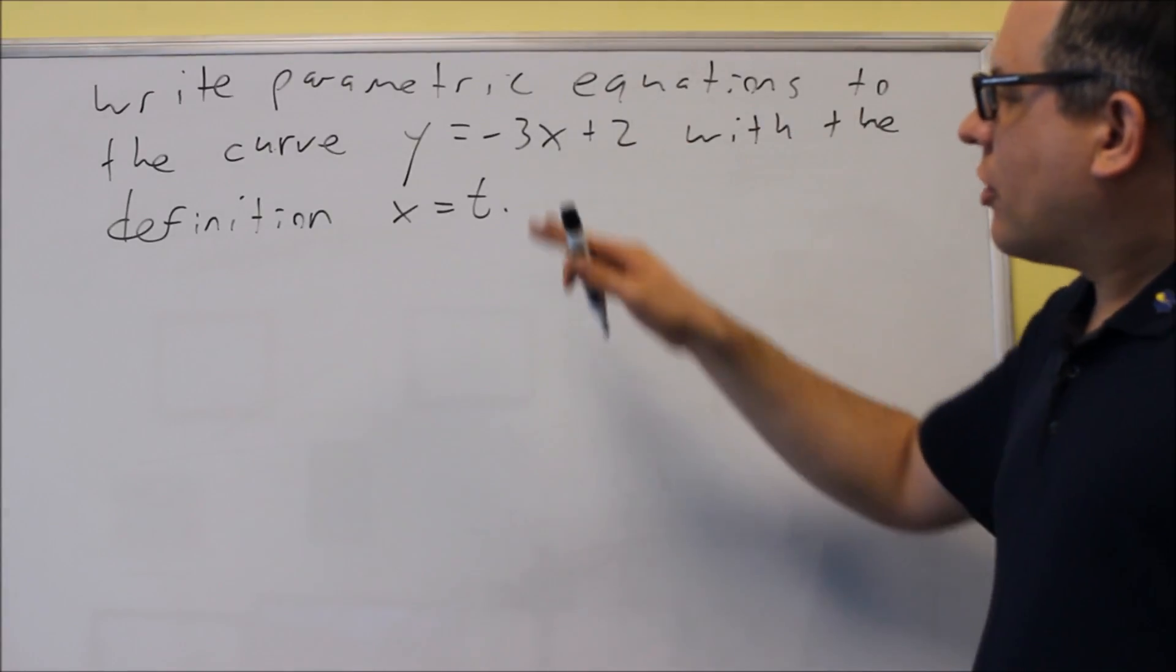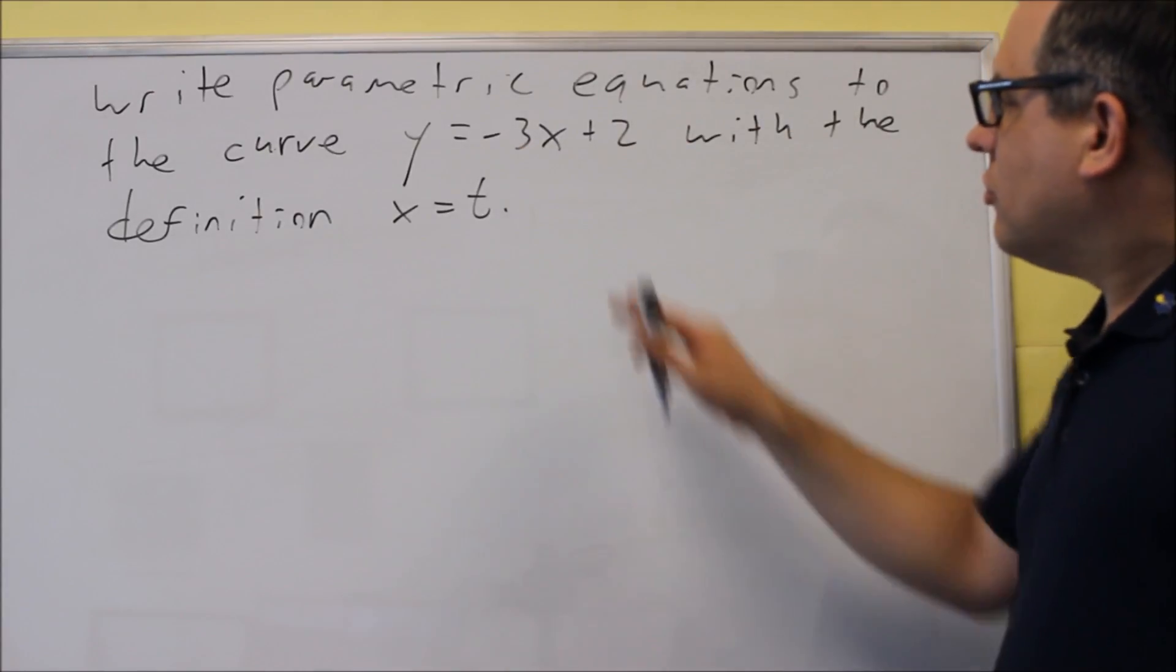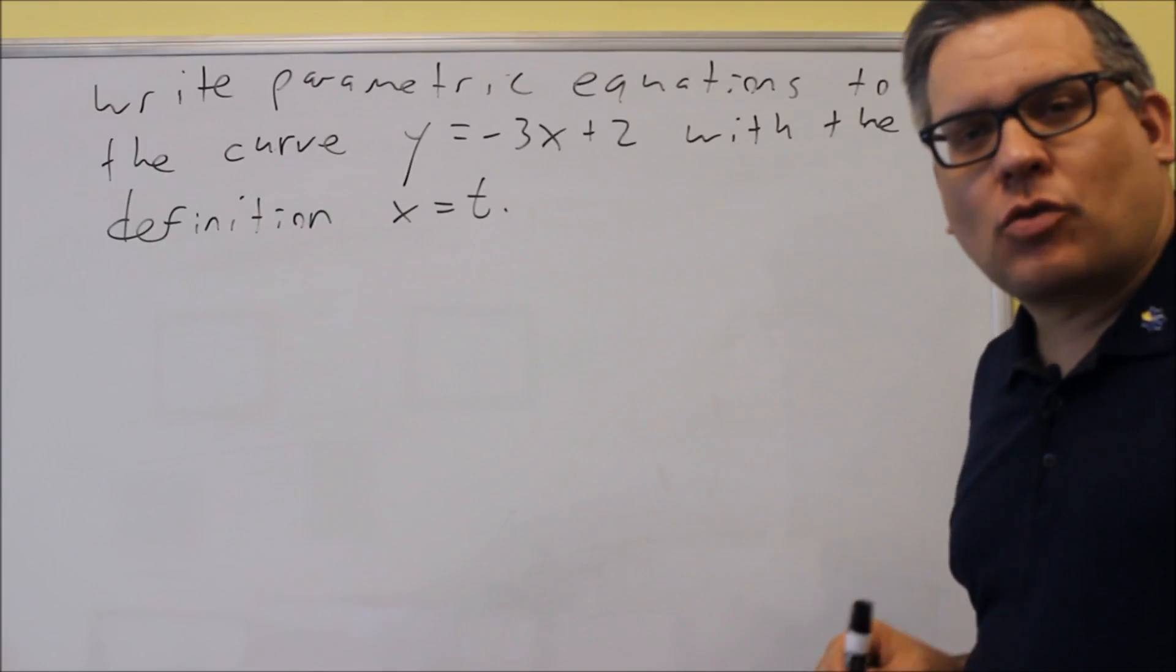We're going to write parametric equations for the curve y = -3x + 2 with the definition x = t.